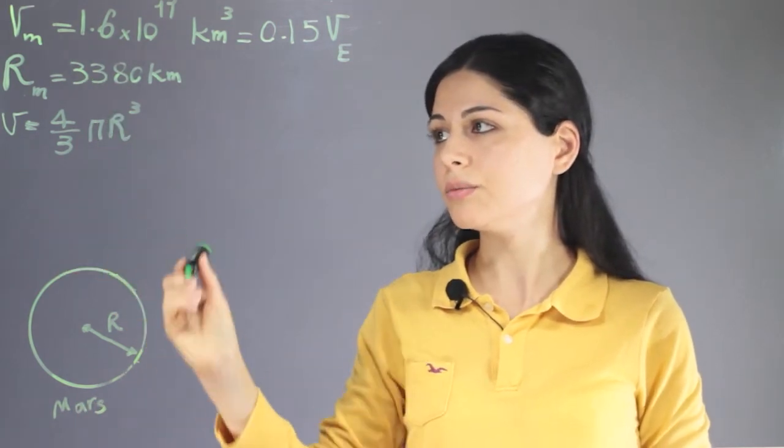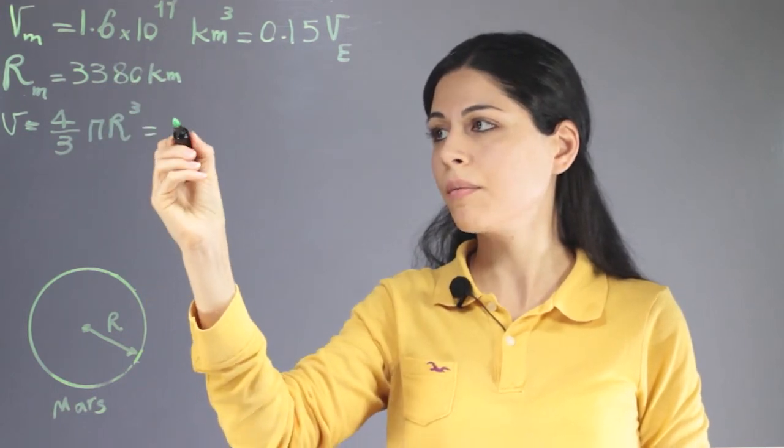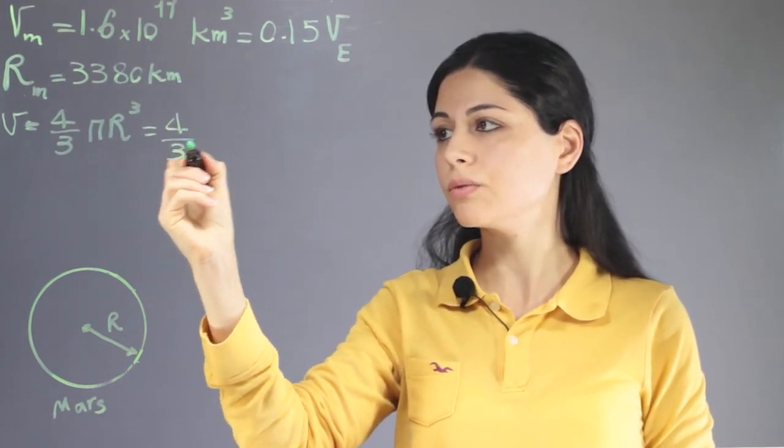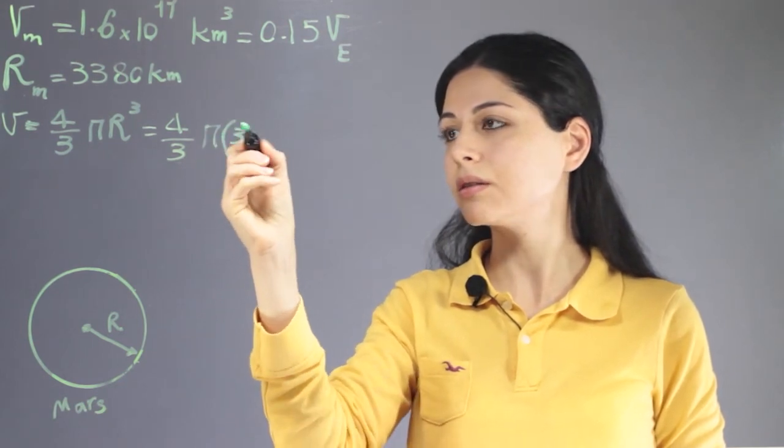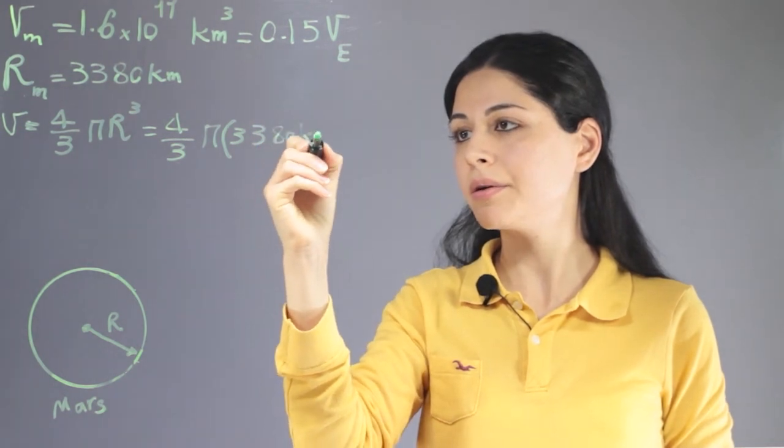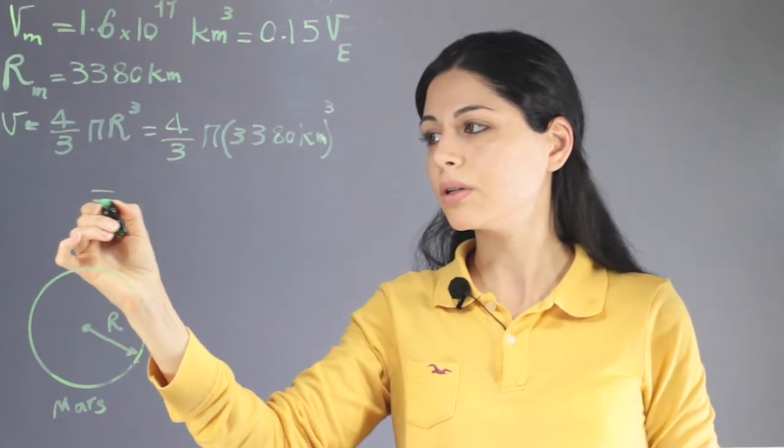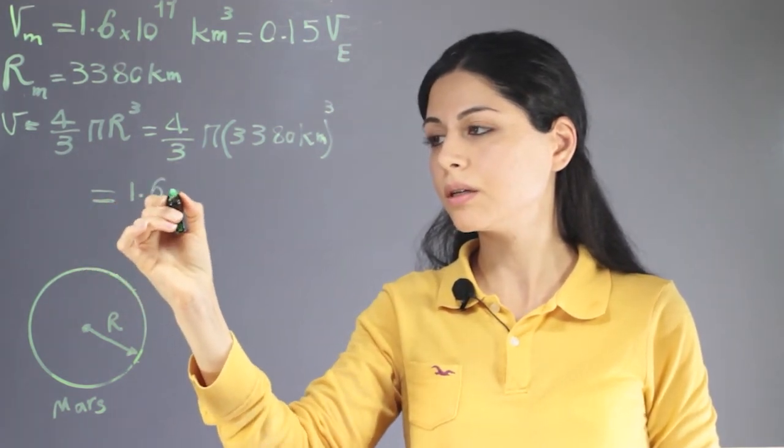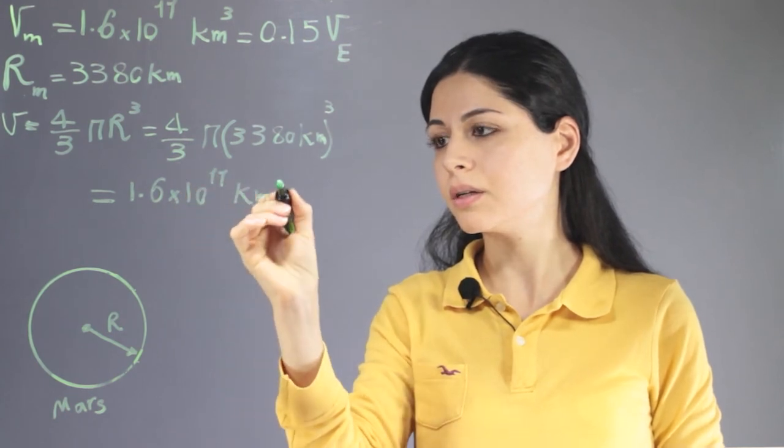Using this formula, we just should plug in the radius into this formula, so we have 4 over 3 pi times 3,380 kilometers cubed, which is approximately equal to 1.6 times 10 to the 11 kilometer cubed.